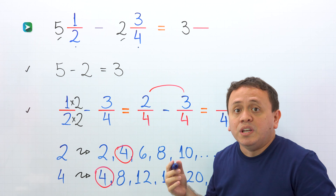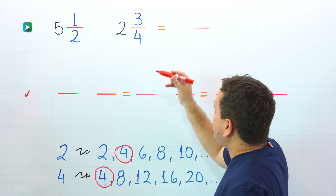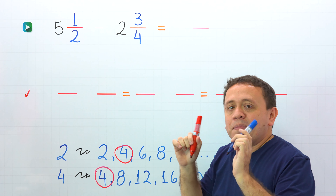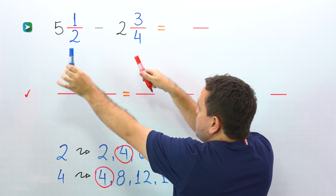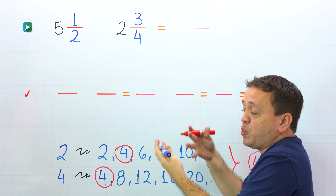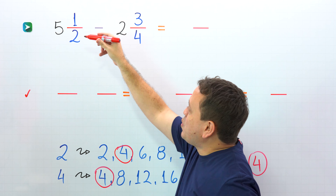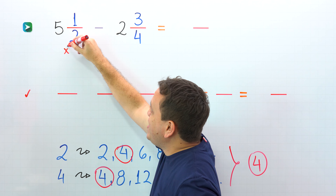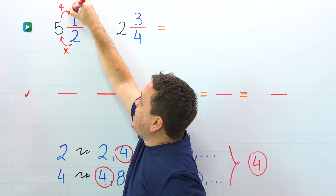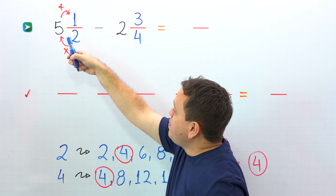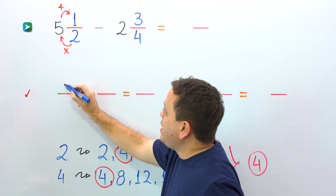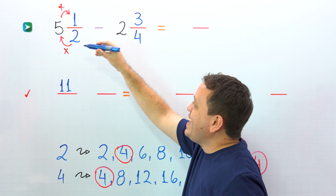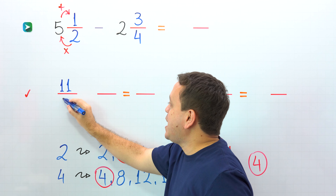In cases like this, we need to follow a different procedure. Given that the fraction of the second mixed number is greater than the fraction of the first mixed number, we need to follow a different procedure. Pay attention to the strategy: first, we will convert both mixed numbers to improper fractions, and next, we will find the difference. Let's start with 5 and 1 half. To convert this mixed number to an improper fraction, we start by multiplying the denominator by the whole number, and then we add this result to the numerator. 2 times 5 is 10, plus 1 gives us 11.